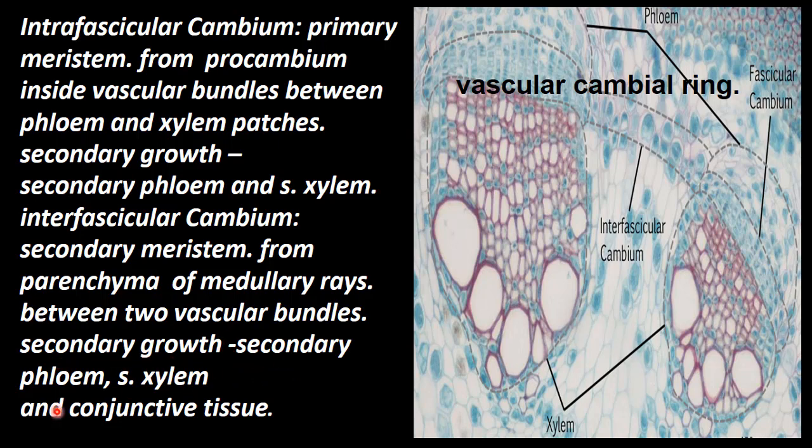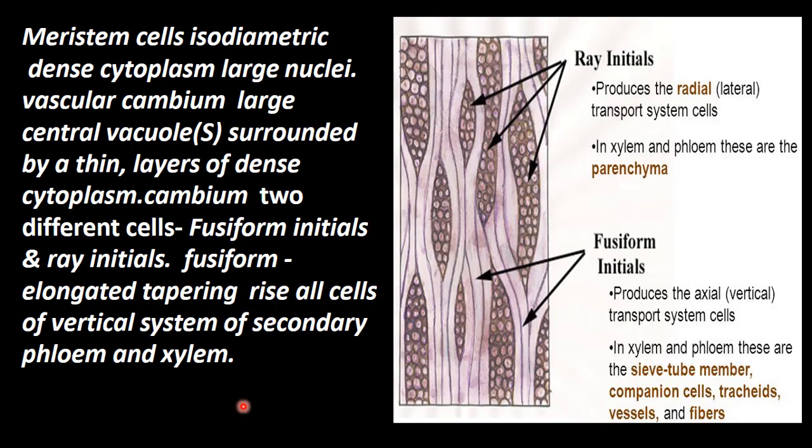Secondary growth produces secondary phloem, secondary xylem, and conjunctive tissue. These are all the things produced in secondary growth.